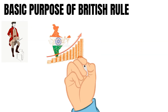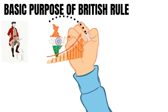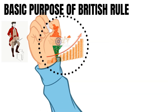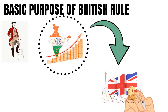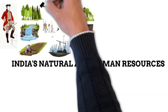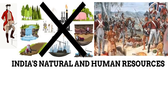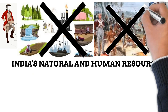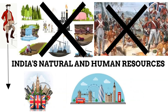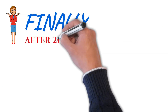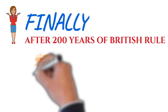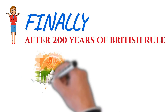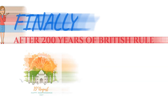The main purpose of British rule in India was to use the Indian economy as a feeder economy for the development of the British economy. They exploited India's natural as well as human resources for the glory of their own country. Finally, after 200 years of British rule, India gained independence on 15th August 1947.